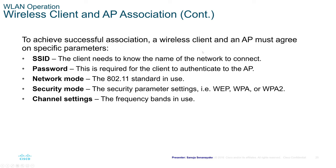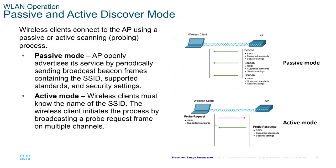There are two discovery modes: passive and active. A wireless client connects to the AP using a passive or active scanning process. The active scanning process is also known as the probing process.